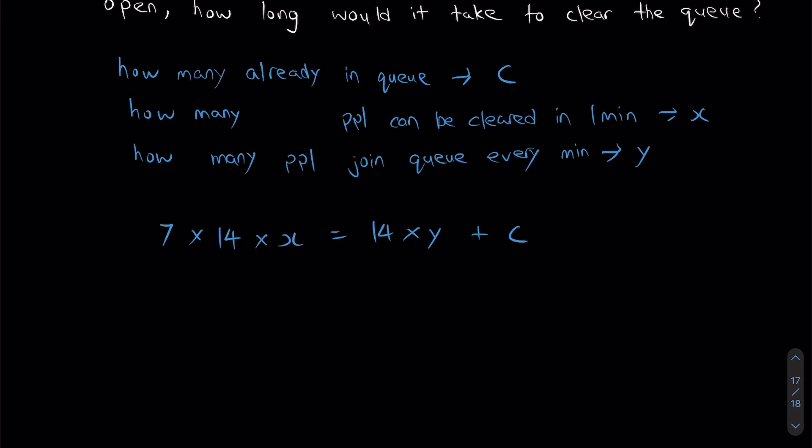This right here, when I simplify it, will give me 98X is equals to 14Y plus C. And I'm going to call this equation one.